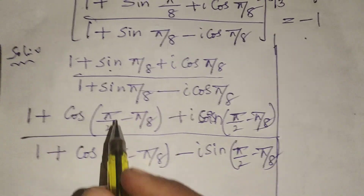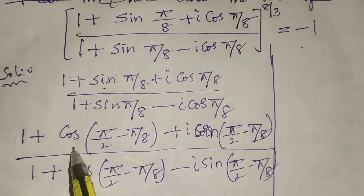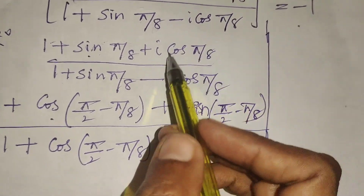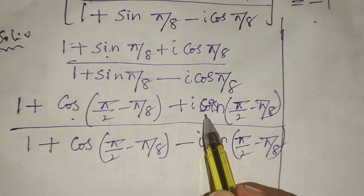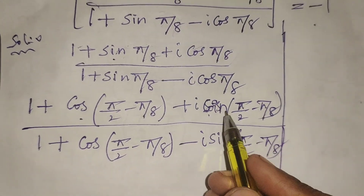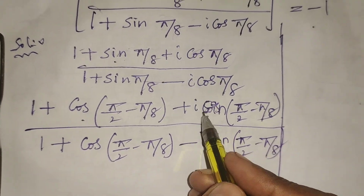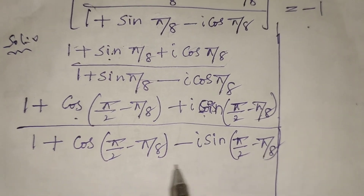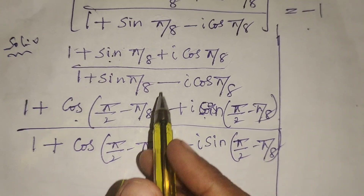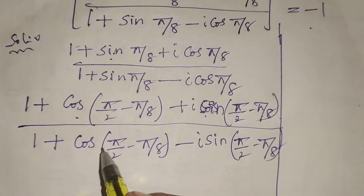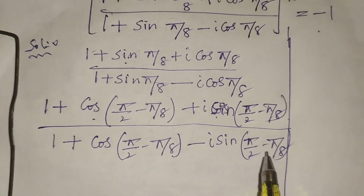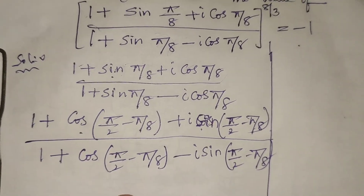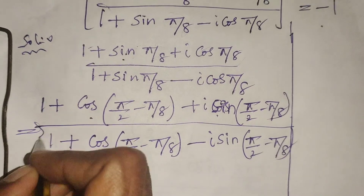We know that the formula sin θ = cos(90° - θ). This same formula is applied to both the numerator and denominator here.